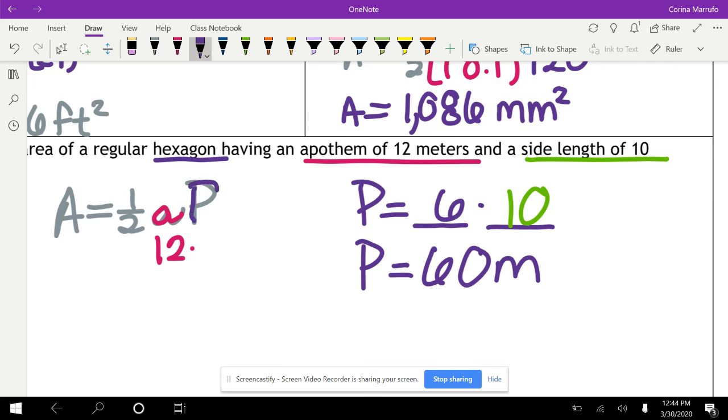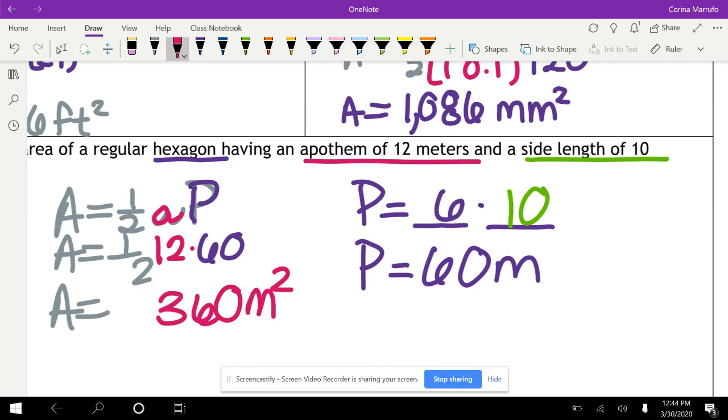So now we're ready to plug in. Instead of P, we're going to put a 60. And we're ready to finish off the rest of our formula. So area equals one-half of 12 times 60. It's not letting me write this in. Oh, it doesn't like me. All right. So we put that in our calculator, and that gives us 360. And our units are meters squared.